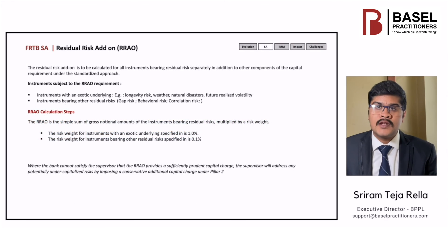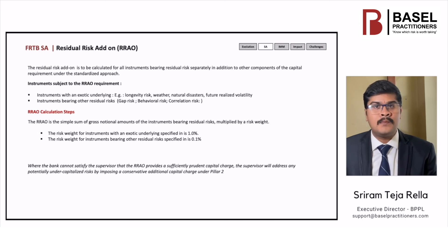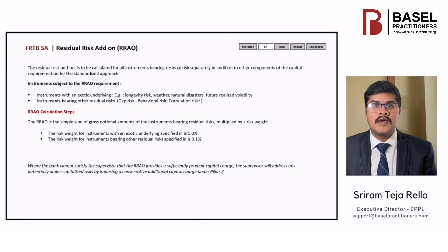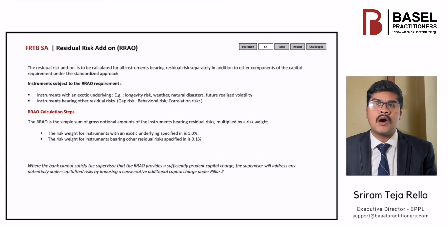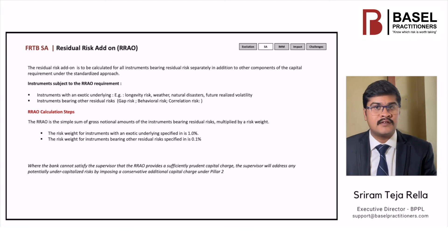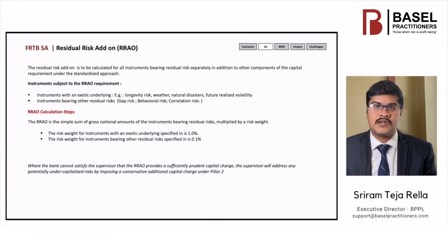The residual risk add-on (RRAO) is to be calculated for all instruments bearing residual risks, separately in addition to other components of the capital requirement under the standardized approach. RRAO is the risk weight applied to notional amounts of instruments with non-linear payoffs. Instruments subjected to RRAO include those with an exotic underline like longevity risk, weather, natural disasters, etc., and instruments bearing other residual risks such as gap risk, behavioral risk, and correlation risks. The RRAO is the simple sum of gross notional amounts of the instruments bearing residual risks, multiplied by a risk weight of 1% or 0.1%.